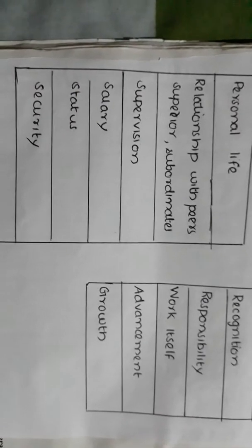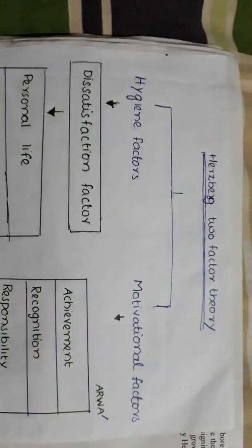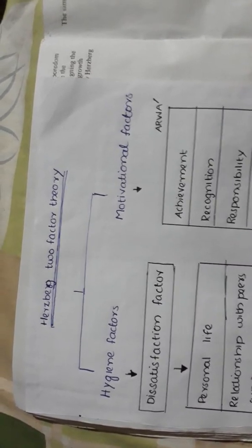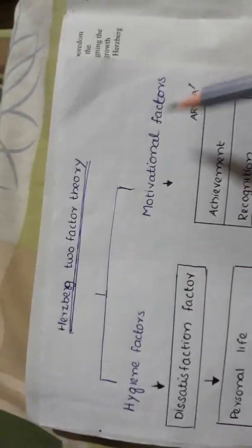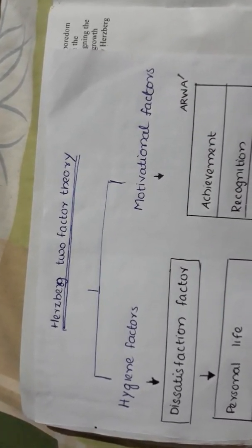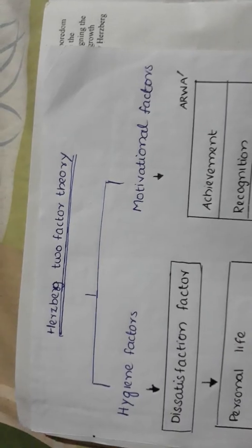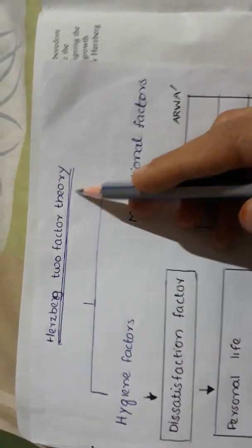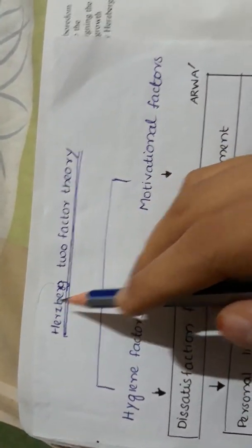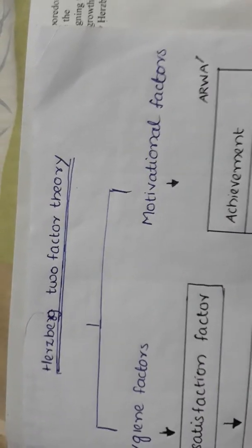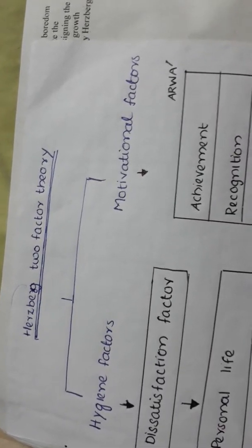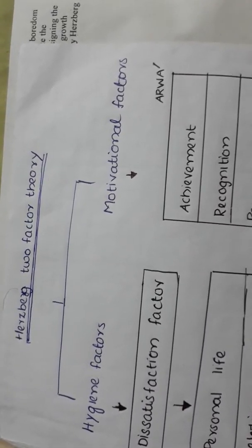Hi guys, this is Mobina back with another session on Herzberg's Two-Factor Theory. We all know that Maslow's Need Hierarchy Theory is established on the basis of needs. Similarly, Herzberg's Two-Factor Theory is proposed by Herzberg, who has divided his factors or needs into two categories.